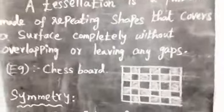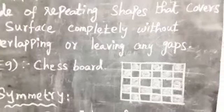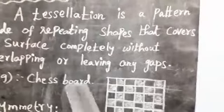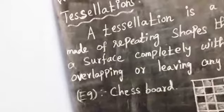For example, a perfect example is the chessboard. Do you know the chessboard? I hope you all know the chessboard. The chessboard is a tessellation.